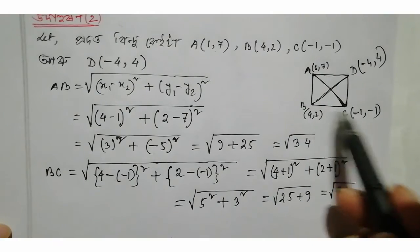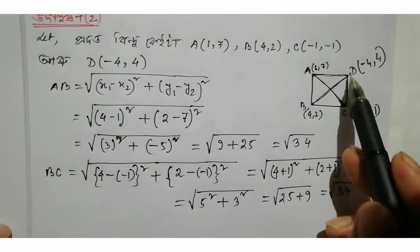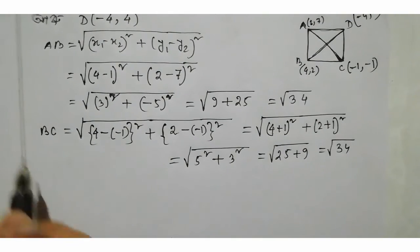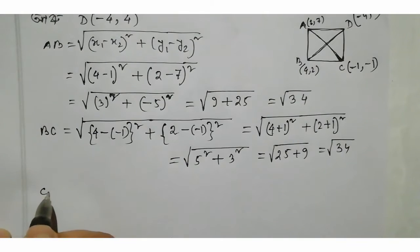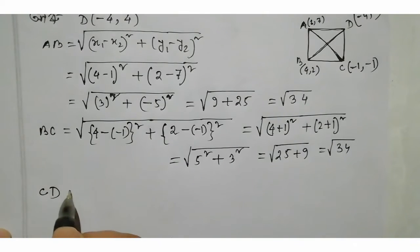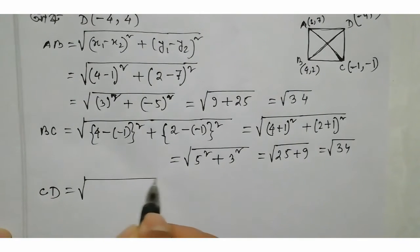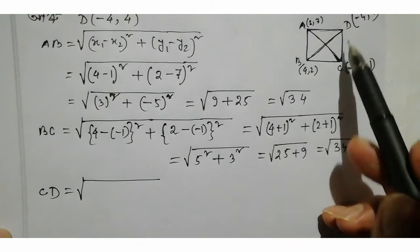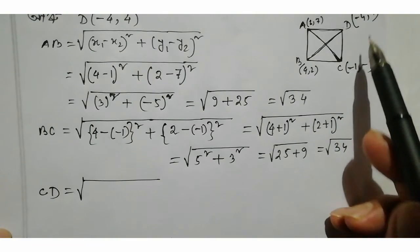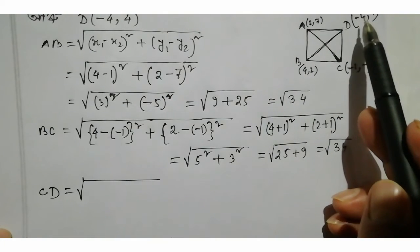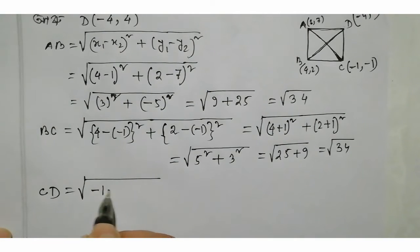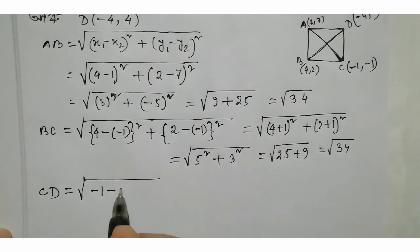Now I'm going to calculate CD. So C and D: CD. Using the formula with minus 1, minus, minus 4. So this minus 1, this formula minus, and I'm going to apply minus 4.